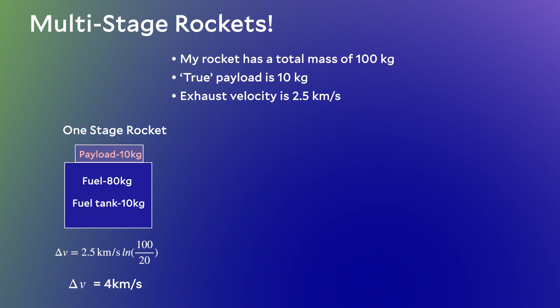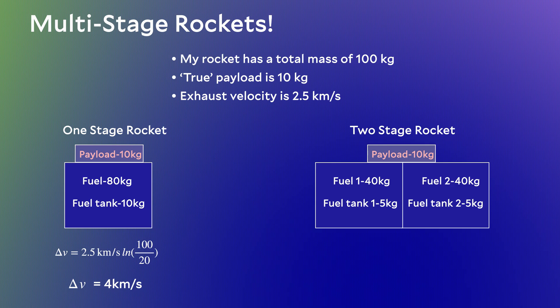Now let's do this again but add a second stage. I'm going to split my propellants in half. I'll still have 10 kilograms payload and 80 kilograms of fuel, but this time I'll split the fuel into two tanks — 40 and 40 kilograms each — and each tank will have 5 kilograms of structure. For the first stage, delta V equals 2.5 km/s times the natural logarithm of 100 over 60. 100 is the initial mass on the launch pad, and 60 is 100 minus the 40 kilograms of fuel burned in the first stage. Plugging in these numbers, I get 1.3 kilometers per second — not very impressive.